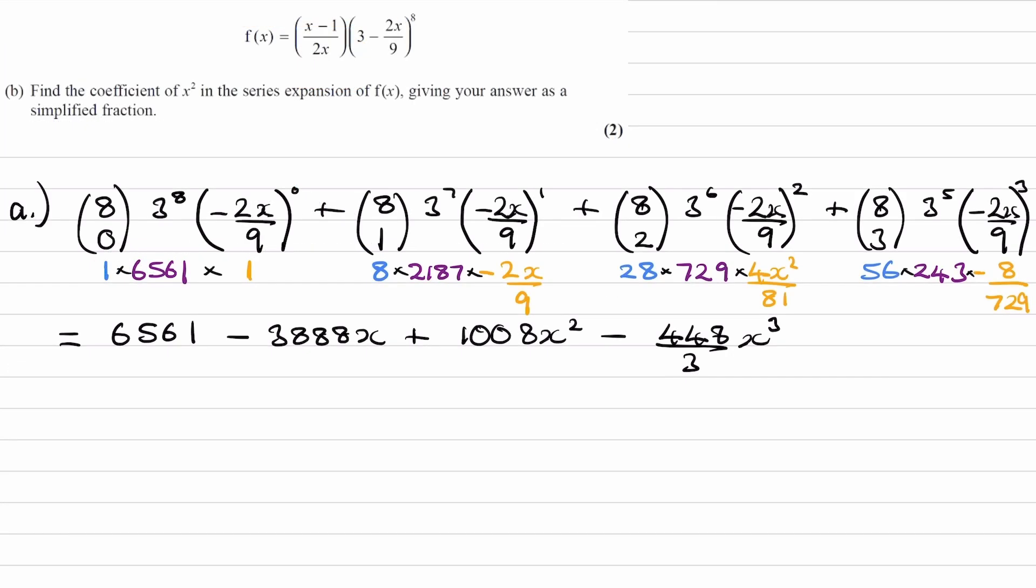For part b, we're given f(x) is equal to what we have over here, so the same binomial expansion at the end, and then we have this in front, (x - 1)/(2x). Find the coefficient of x² in the series expansion of f(x), giving your answer as a simplified fraction.